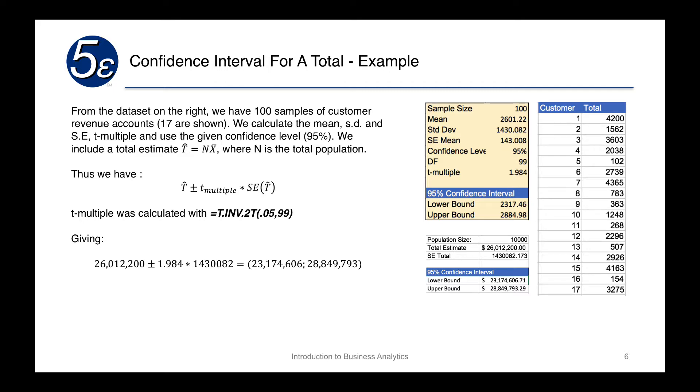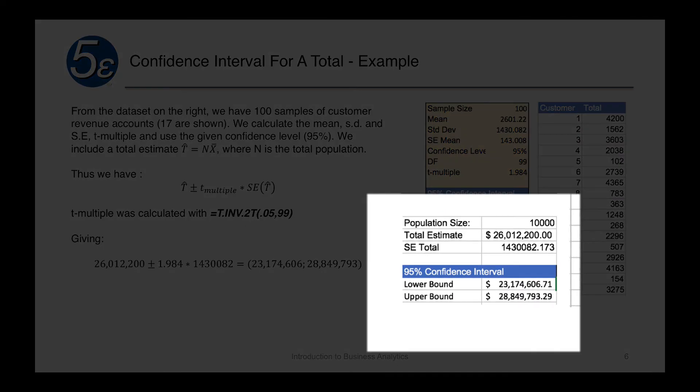So therefore, what we do is, in order to calculate it, at the bottom we have another set of boxes which says our total population size is going to be 10,000. So our total estimate is going to be our mean, which was 2,601 times the 10,000, giving us 26 million.